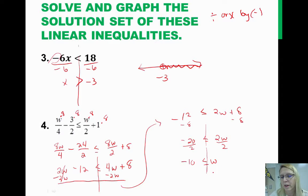So I'm going to graph this. Here's negative 10, and it's a closed dot. And since w is larger than negative 10, we're going to go to the right.